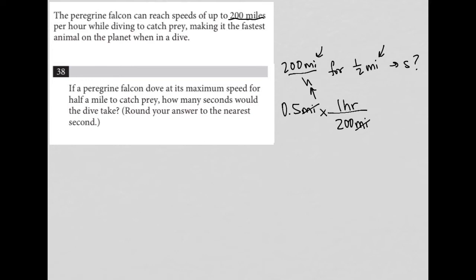And so now I have hours, but I want seconds. So I can now multiply by, every one hour is equal to 3,600 seconds.